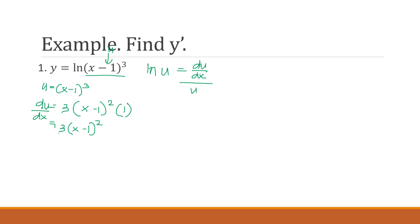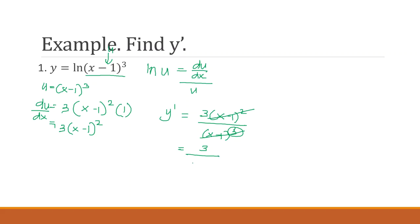We can now solve for the derivative of y. We have du/dx which is 3(x minus 1) squared, all over the original value of u which is (x minus 1) cubed. There are common terms between the numerator and denominator — we can cancel (x minus 1) squared with (x minus 1) cubed, leaving one power. That gives us the simplified final answer: y prime equals 3 over (x minus 1).